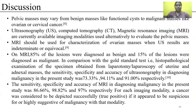Pelvic masses may vary from benign masses like functional cysts to malignant ovarian or cervical cancers. Ultrasound, CT, and MRI are currently available imaging modalities used to evaluate pelvic masses. MRI should be used for characterization of ovarian masses when ultrasound results are intermediate or equivocal. On MRI, 85% of lesions were diagnosed as benign and 15% as malignant. In comparison with the gold standard histopathological examination from laparotomy or laparoscopy, the sensitivity, specificity, and accuracy of ultrasonography in diagnosing malignancy were 73%, 94.1%, and 91% respectively.